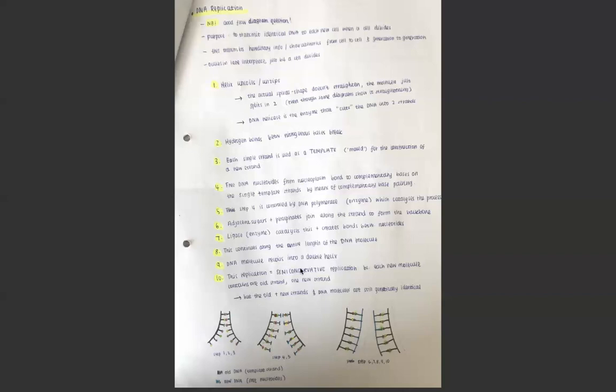I've seen questions before where they ask you to use a diagram to explain semi-conservative replication. This is the kind of diagram I would draw where you have the original strand and you show how the free nucleotides join one to each strand of the old strands to create a new strand, and how you now have two identical DNA molecules, identical to each other and to the original molecule, each with one strand from the old DNA molecule and one strand from free nucleotides.